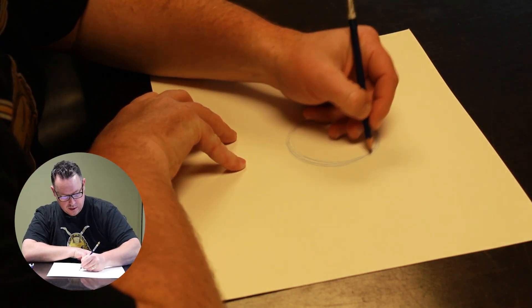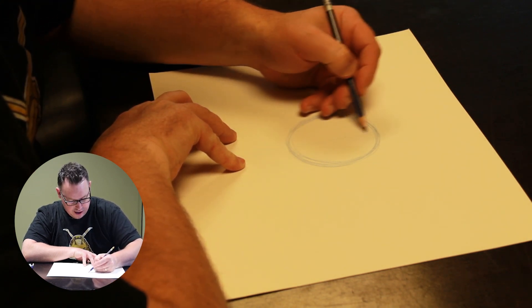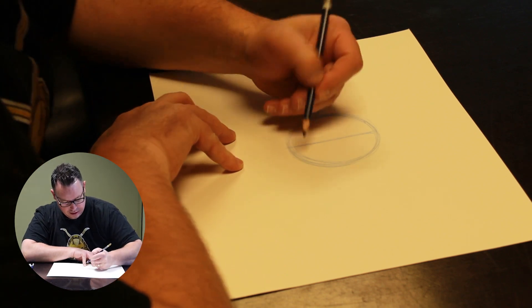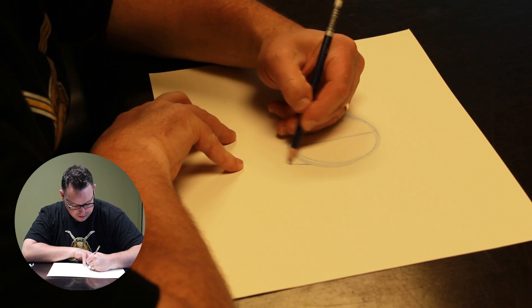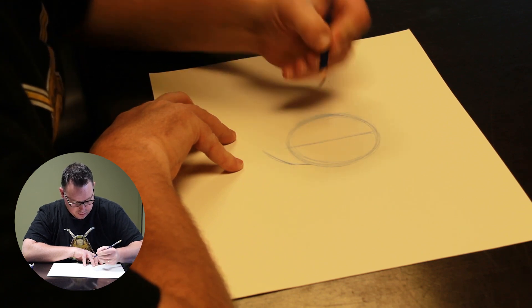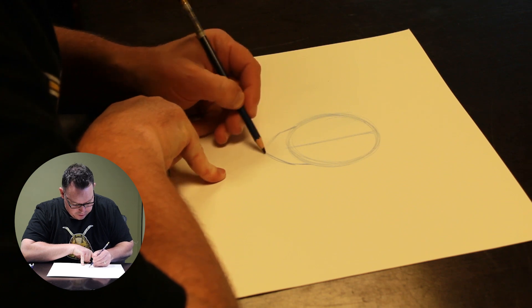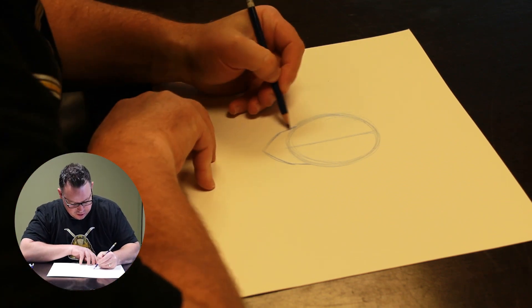So I always start off with that circle and then I'll take that circle and divide it in half just like that. Then I'm going to draw a chin line for him. Depending on the character I'm doing, the chin shape will change.